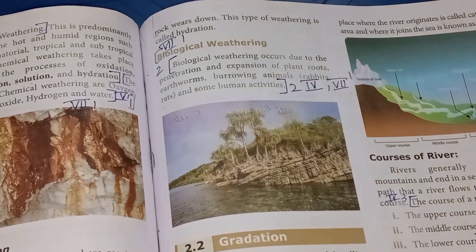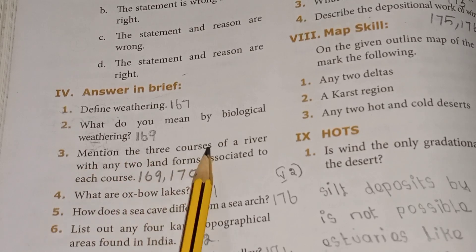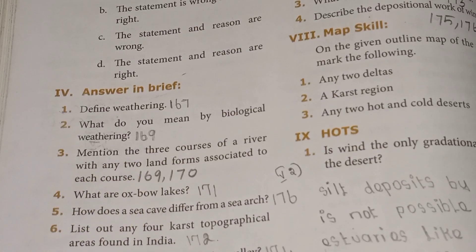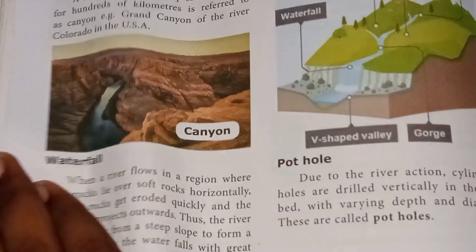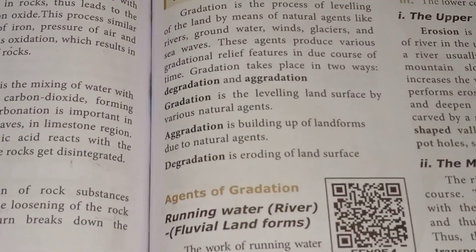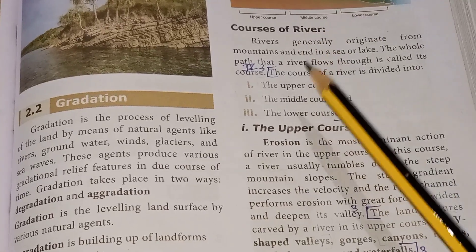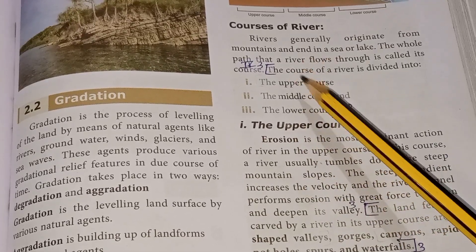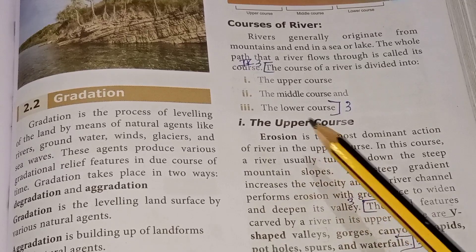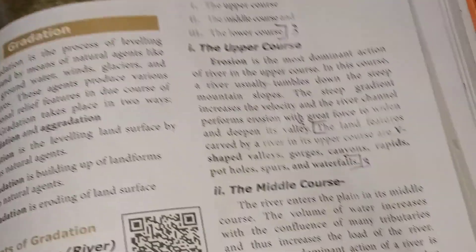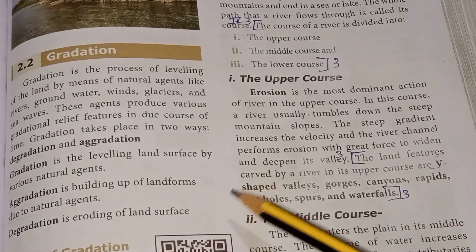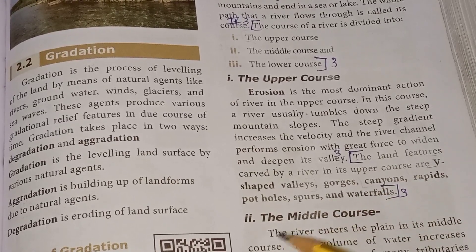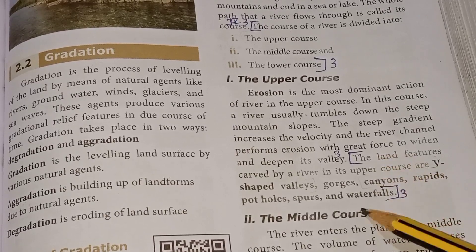Third question: mention the three courses of a river with any two landforms associated with each course. Page number 169. The course of a river is divided into the upper course, the middle course, and the lower course. The landforms carved by a river in its upper course are: V-shaped valleys, gorges and canyons, rapids, potholes, spurs, and waterfalls.